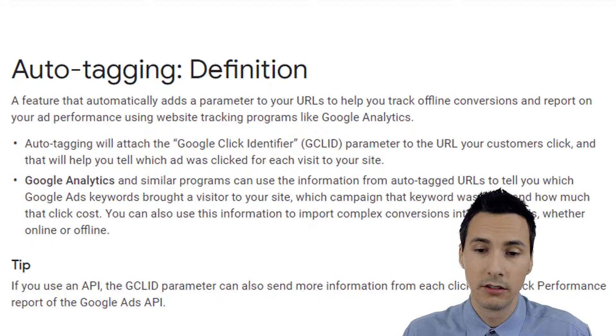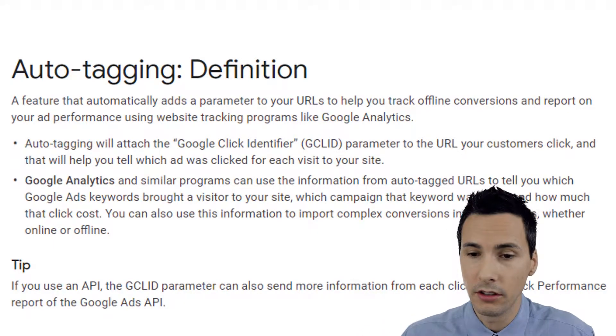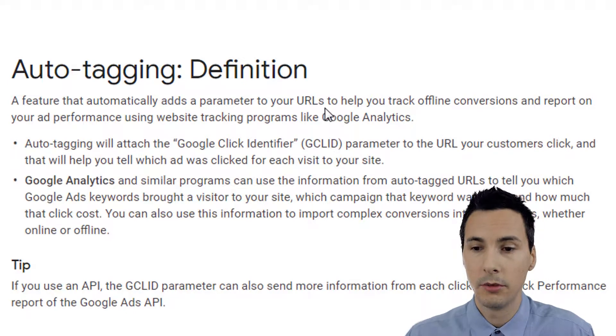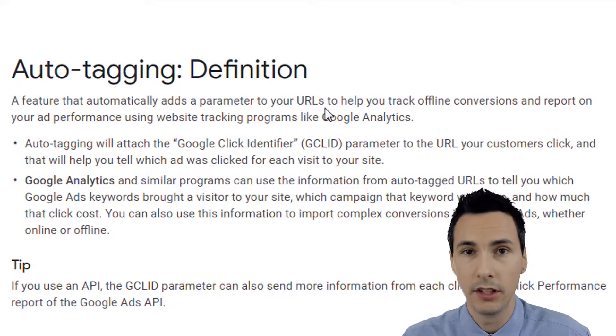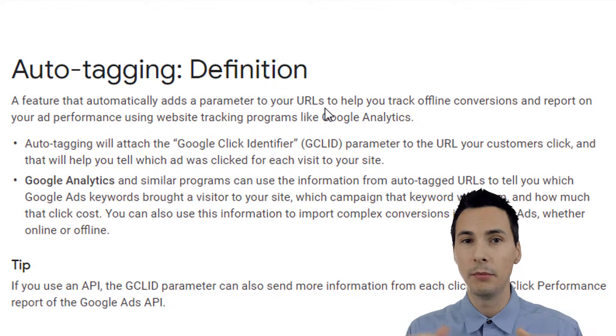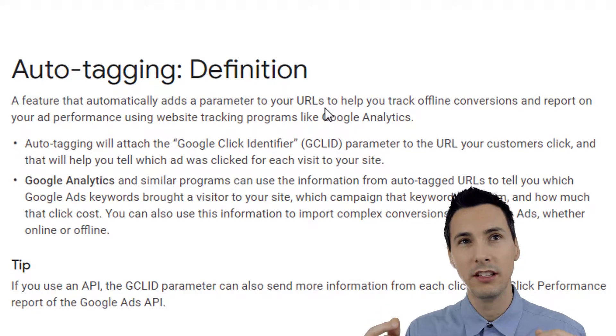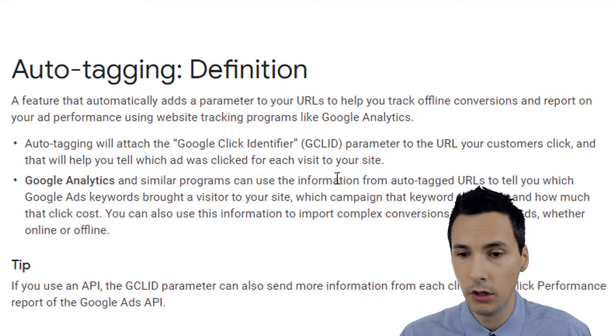In this video I'll talk about auto tagging and what it is. It's a feature that automatically tags a parameter to your URLs to help you track offline conversions and also report data back to Google Analytics. Essentially, it's a way for Google Analytics and Google Ads to communicate information about the clicks that are occurring.